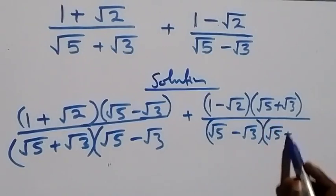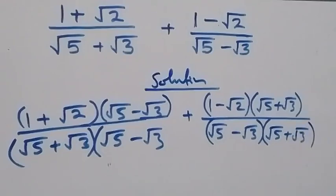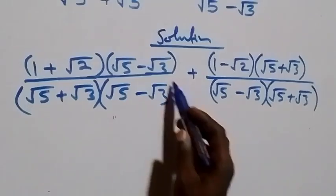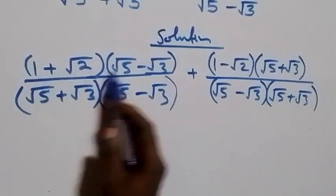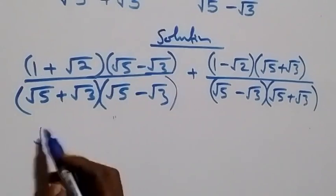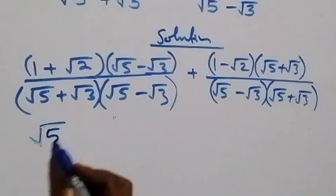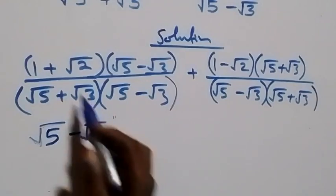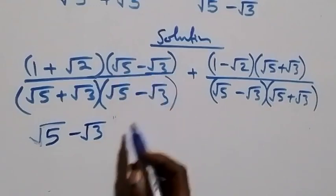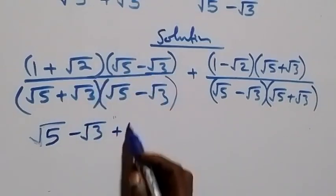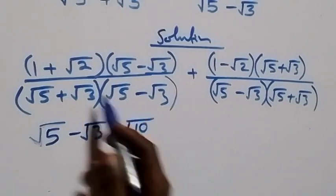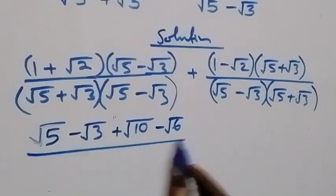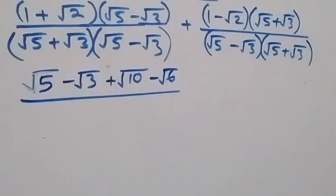When we expand, from the first numerator bracket: 1 × √5 = √5, 1 × (−√3) = −√3, √2 × √5 = +√10, and √2 × (−√3) = −√6.